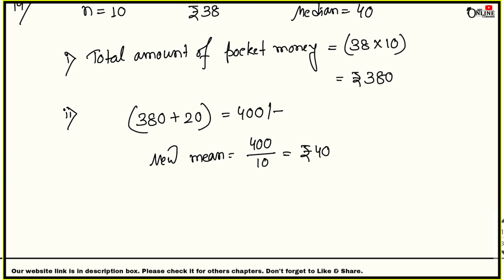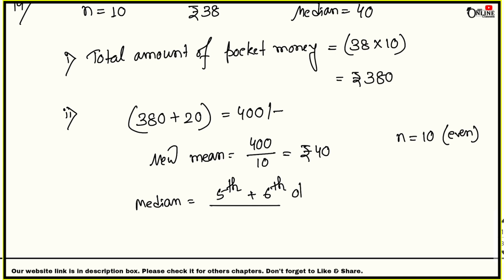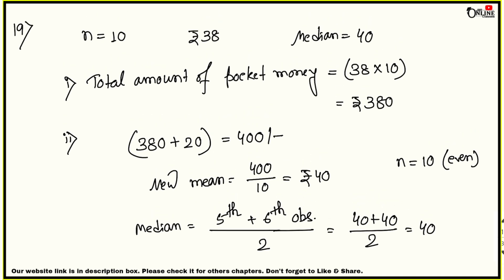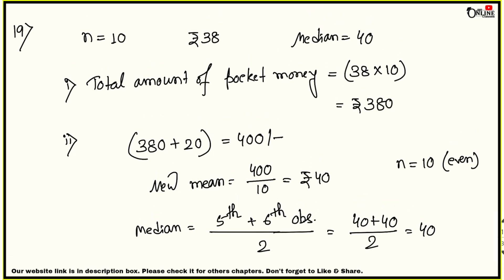For the new median: n = 10 (even). Formula: Median = (5th observation + 6th observation) / 2. Since only the highest value changed, the 5th and 6th observations remain 40 each. So new median = (40 + 40)/2 = 40. The median remains unchanged — median always remains the same when only an extreme value changes.